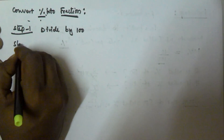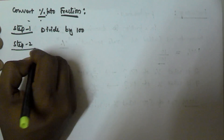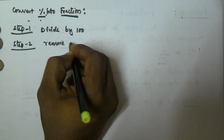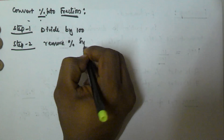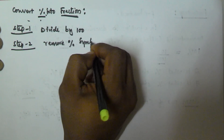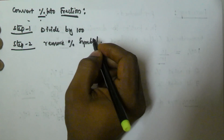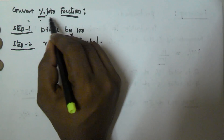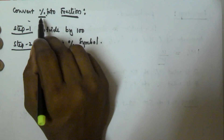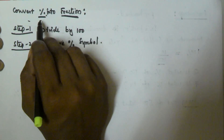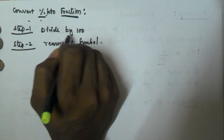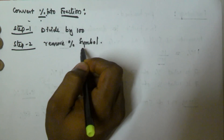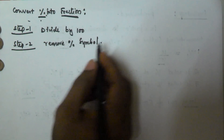Step two is: remove the percentage symbol. So there are two steps to convert a percentage into a fraction — first, divide the given percentage by 100, and second, remove the percentage symbol.